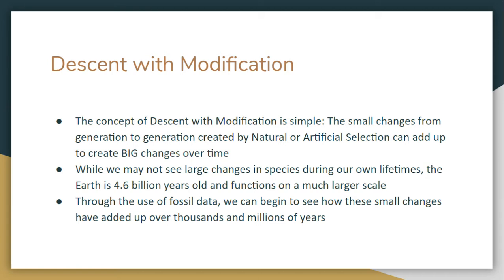So what is descent with modification? The concept is actually pretty simple. It's just taking that last idea from the review and making it happen over a long period of time. The idea that these small changes from generation to generation — a gene going from 30% common to 33% common — if you keep making small changes generation after generation over and over, eventually all of those small changes add up to a very big change.